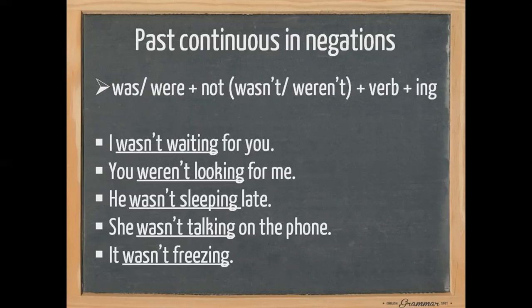She wasn't talking on the phone. She, plus 'was', then we add 'not': wasn't, then 'talking' — verb base form plus '-ing' — then 'on the phone', which is the complement. And the last one: it wasn't freezing. It, plus 'was', then we add 'not': wasn't, freezing — verb 'freeze' plus '-ing'. So the negative: 'wasn't' or 'weren't', then the verb plus '-ing'.